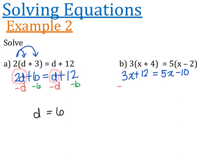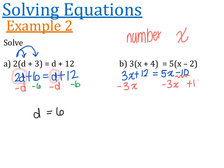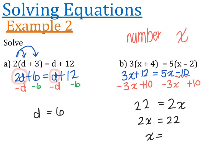I'm going to subtract 3x from both sides, getting my x's on the right and my numbers on the left. I need to get rid of this minus 10 by adding 10 to both sides. 3x minus 3x is nothing; 12 plus 10 is 22; 5x take away 3x is 2x; and minus 10 plus 10 is 0. So I've got 22 is equal to 2x, which is the same as 2x equals 22. Divide both sides by 2 and x is 11.